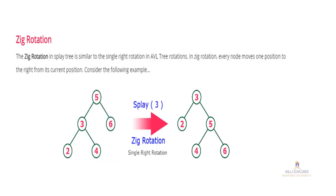The first example is Zig rotation. Zig rotation in a Splay Tree is similar to a single right rotation. Zig means right, so in Zig rotation every node moves one position to the right from its current position.